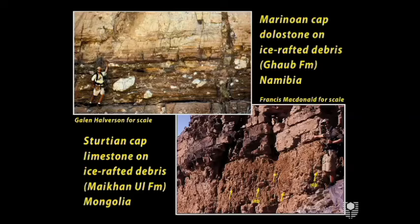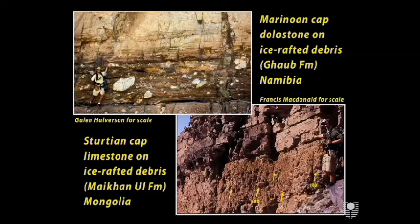I'd like to spend the next hour talking about these remarkable deposits called cap carbonates, which sit sharply and directly upon Cryogenian glacial deposits globally and are unique to Cryogenian glacial deposits. You do not see these carbonates in younger or most older glaciations. And not only are they unique, but they also give us a geochemical and isotopic record of the snowball deglaciation and its aftermath.